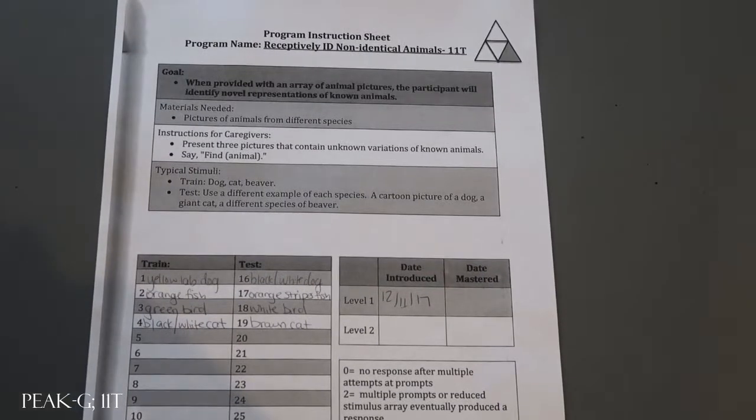This is a material sample for Peak Generalization Receptively ID Non-Identical Animals 11T. For this program, all the materials that you need are pictures of animals from different species.